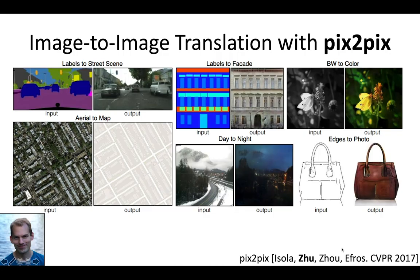A recent example along this direction is Pix2Pix. In 2017, based on the idea of conditional GANs, Filipe Sola and I presented the Pix2Pix framework to translate an image from one domain into another. During training, there is a generator which takes the input and produces the output, and a discriminator which determines if the input-output pair is real or fake. The training takes thousands or millions of input-output image pairs such as satellite to Google Maps. Once the model is trained, it can produce new content given new test images.